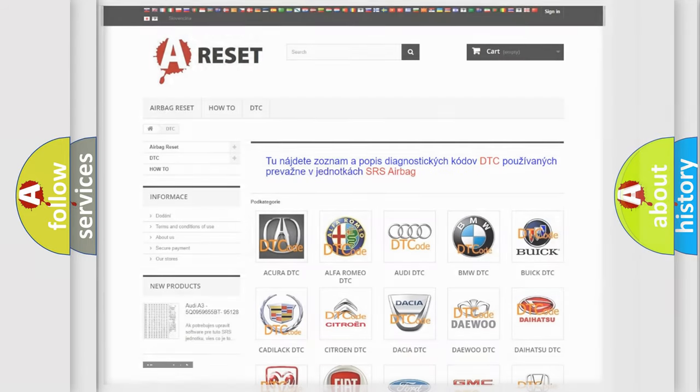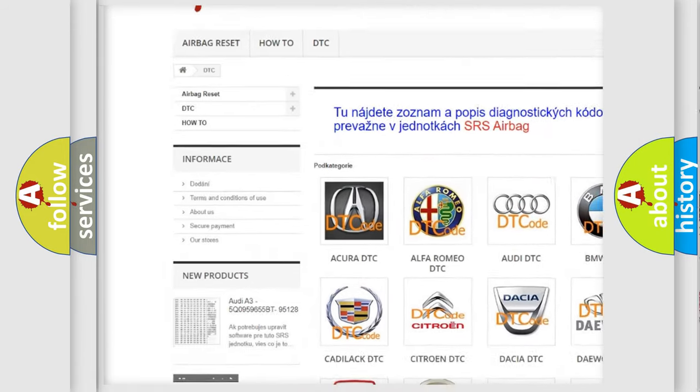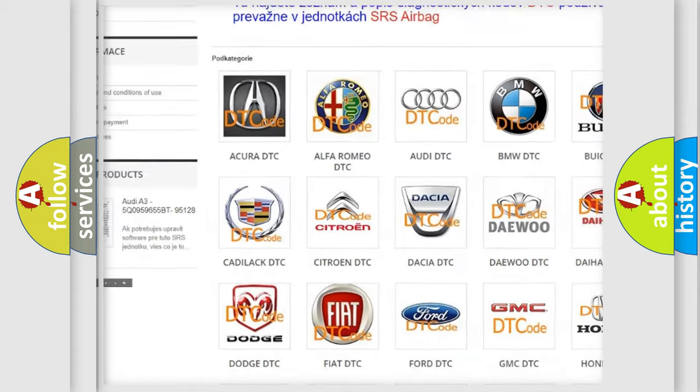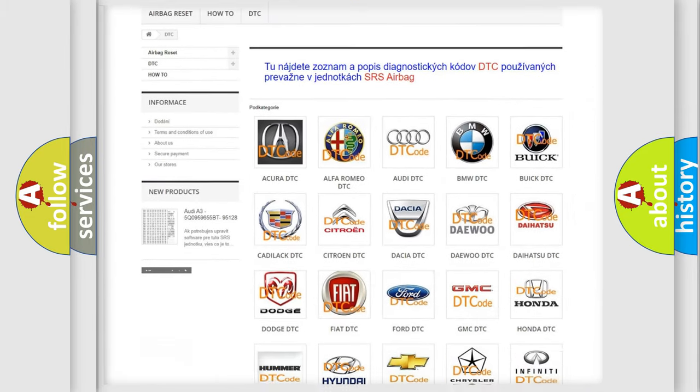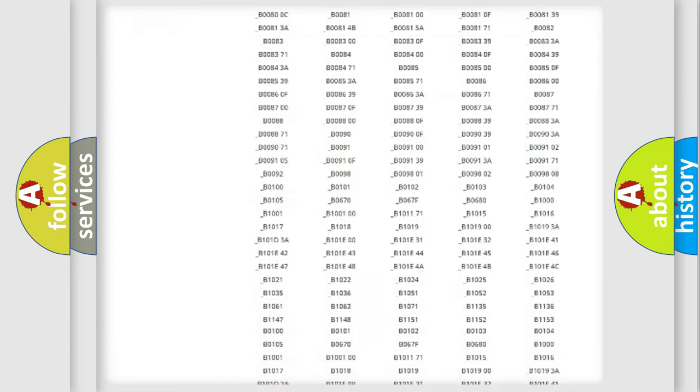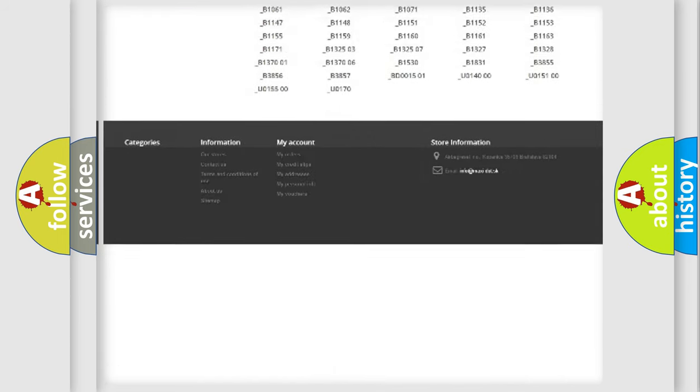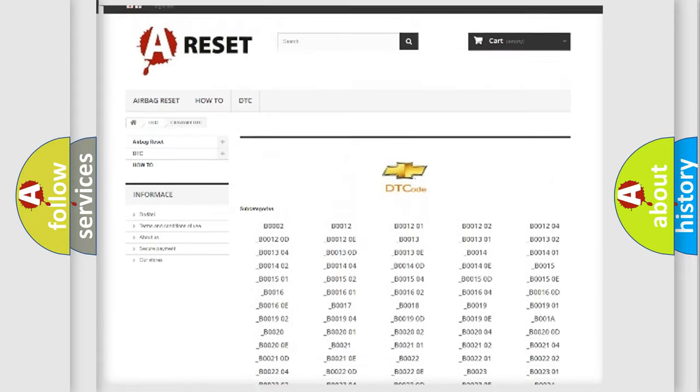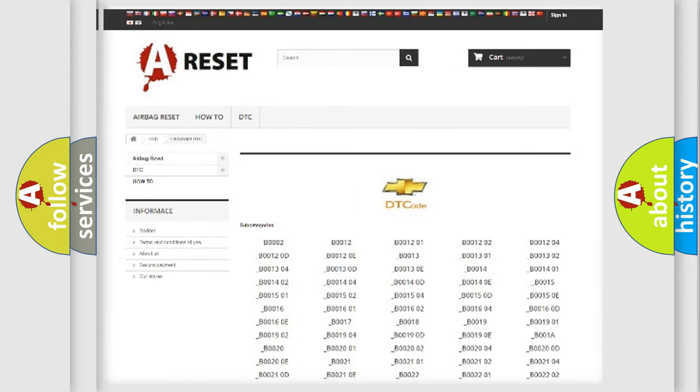Our website airbagreset.sk produces useful videos for you. You do not have to go through the OBD2 protocol anymore to know how to troubleshoot any car breakdown. You will find all the diagnostic codes that can be diagnosed in Chevrolet vehicles, and also many other useful things.